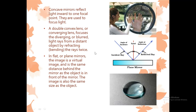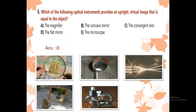Whenever you look at a flat mirror, it can form an image that is virtual — not real — and the same size. Now read the question again: which optical instrument provides an upright, virtual image that is equal to the object? The magnifier? No. Concave mirror? No. Converging lens? No. Microscope? No. Flat mirror? Yes — flat mirror is the best answer. Flat mirror provides an upright, virtual image that is equal to the object.